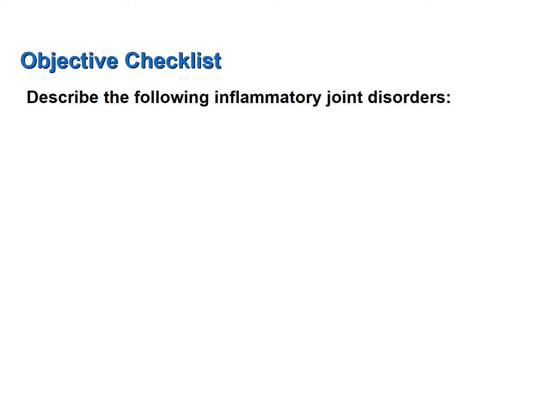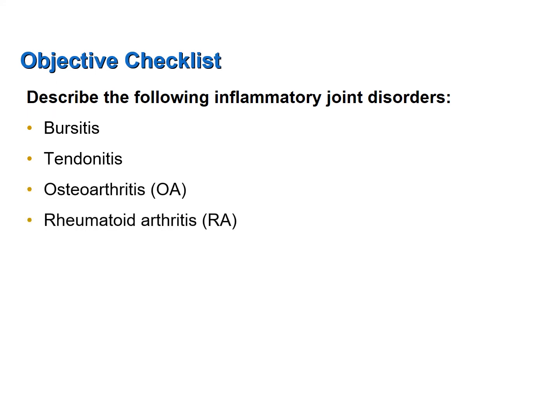This screencast was designed to help you achieve the following objectives: describe the following inflammatory joint disorders — bursitis and tendinitis, osteoarthritis, rheumatoid arthritis, and gouty arthritis, or gout.